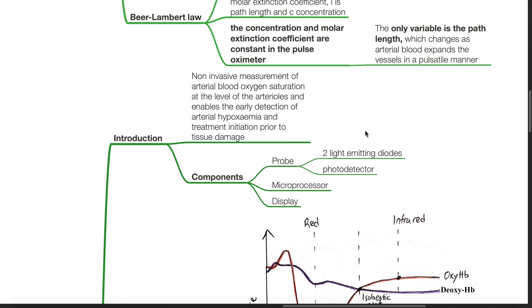The components of a pulse oximeter consist of a probe, which has two light emitting diodes and a photodetector, a microprocessor, and a display.